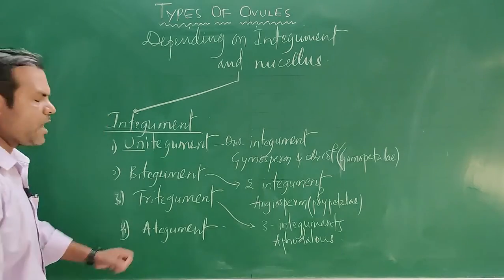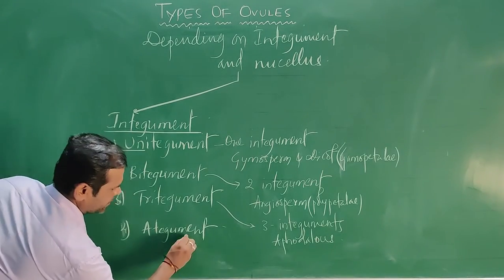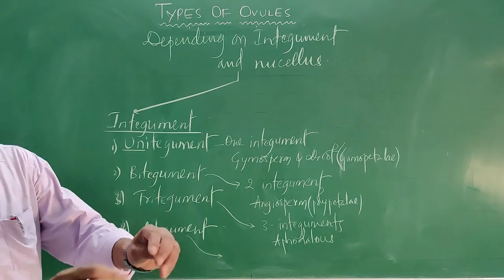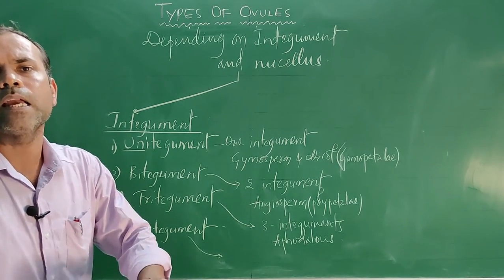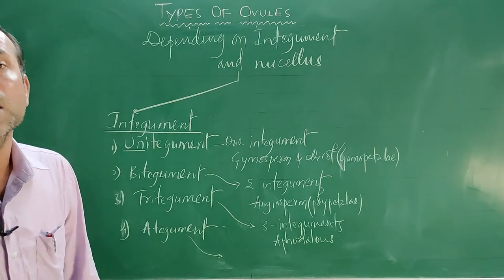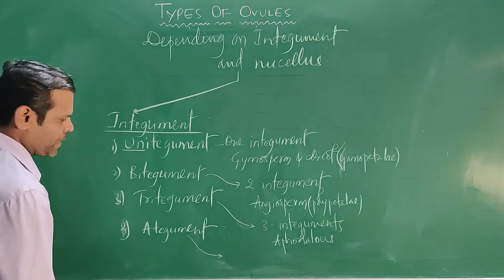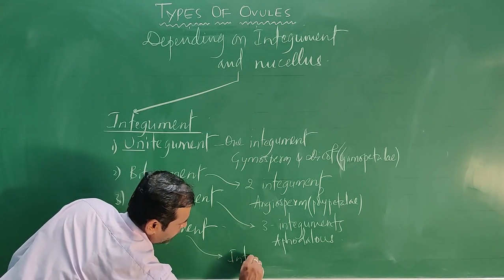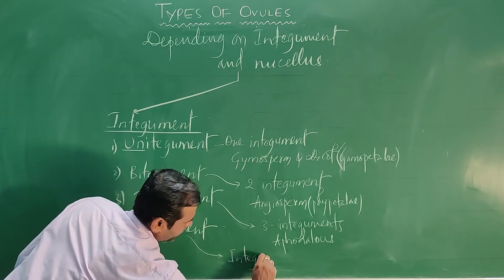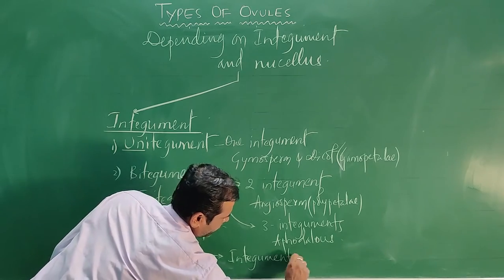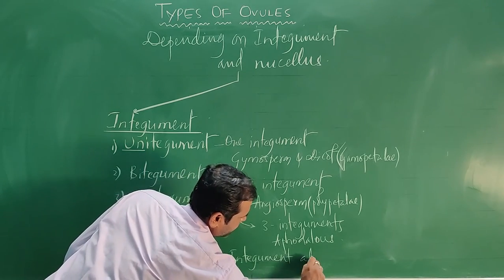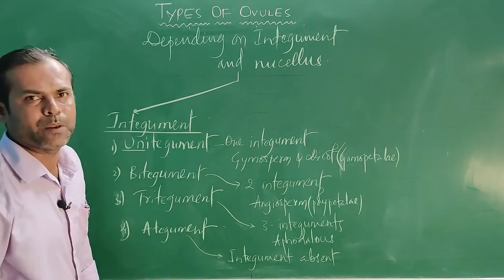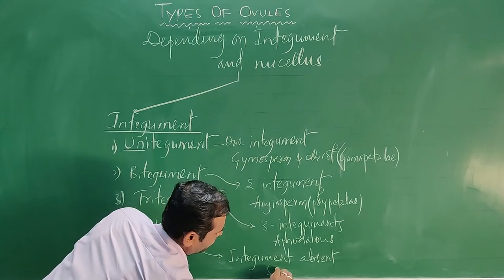The last integument type is ategmic, meaning the ovule is not covered by any integument — integuments are absent. The best example for this is Santalum.